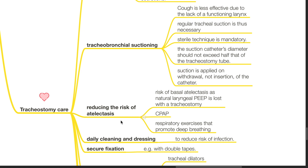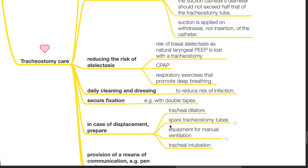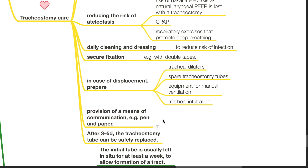Measures to reduce the risk of atelectasis: there is a risk of basal atelectasis as the natural laryngeal PEEP is lost with the tracheostomy. CPAP and respiratory exercises that promote deep breathing reduce this risk. Daily cleaning and dressing reduces the risk of infection. Secure fixation with double tapes. In case of displacement, prepare tracheal dilators, spare tracheostomy tubes, and equipment for manual ventilation and tracheal intubation. Provision of a means of communication such as pen and paper.